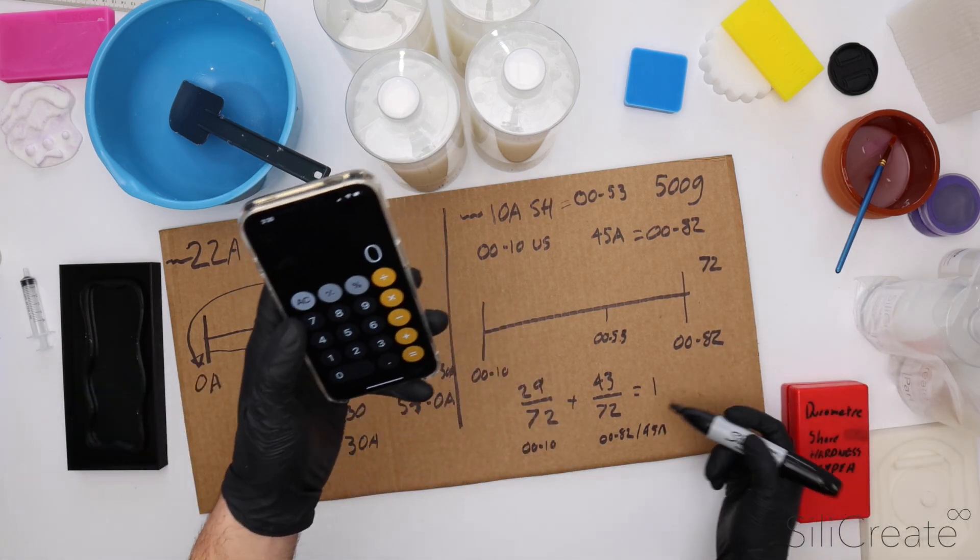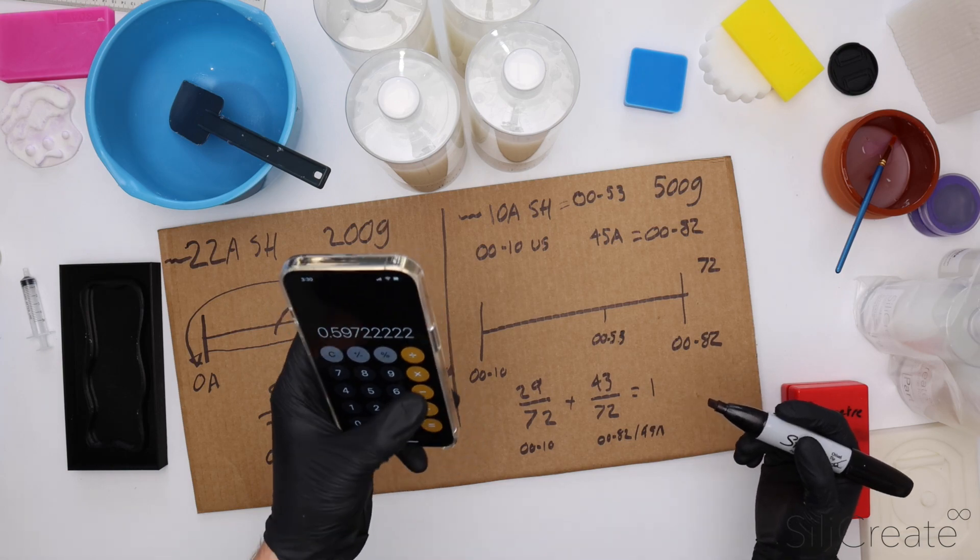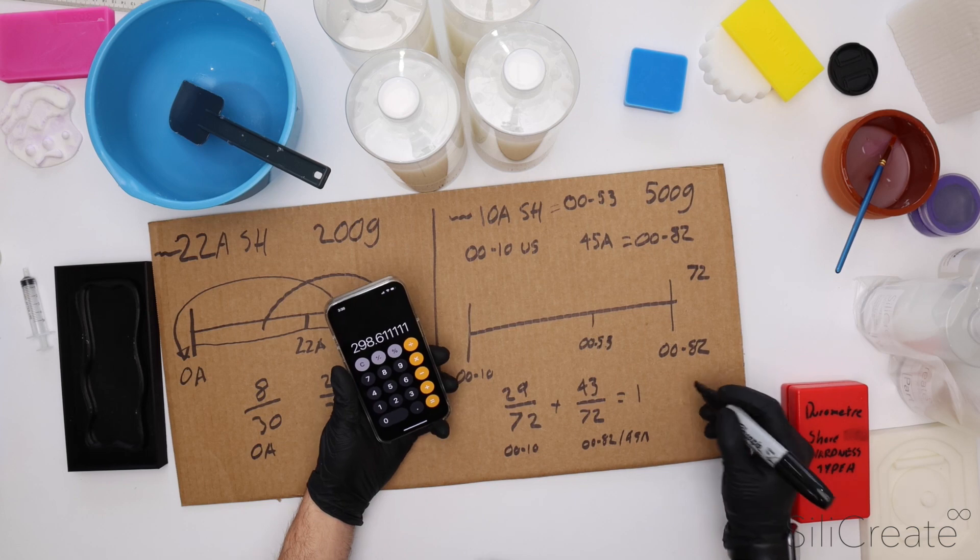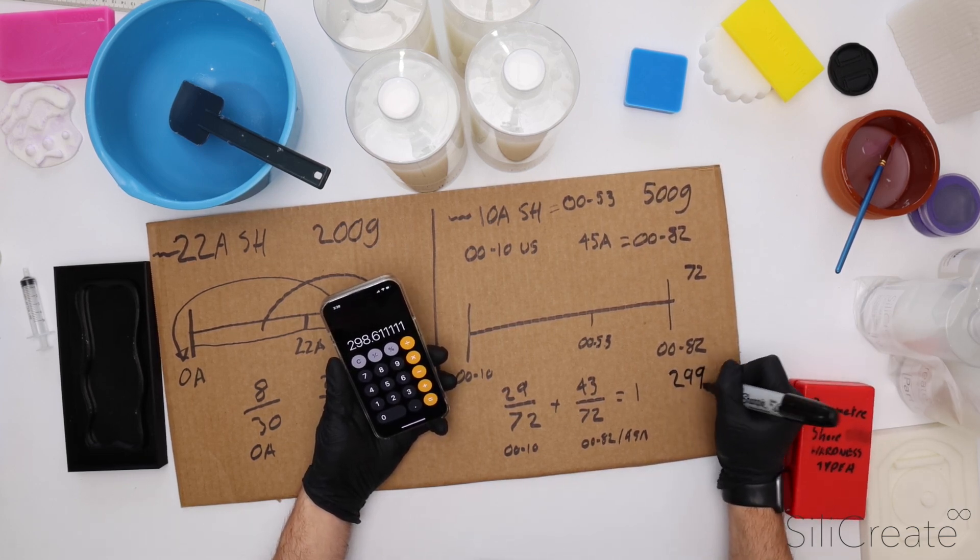And so the final step here is, of course, we want to go 43 divided by 72 times by 500 grams. So we know we need 298, 299, I'll round it up, grams of the 45A.